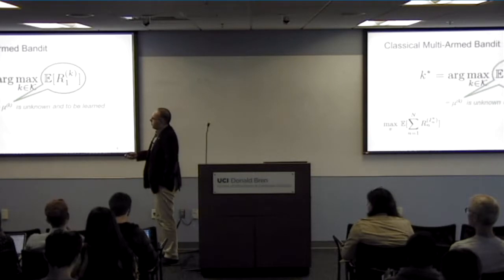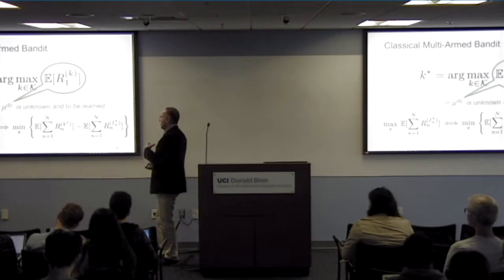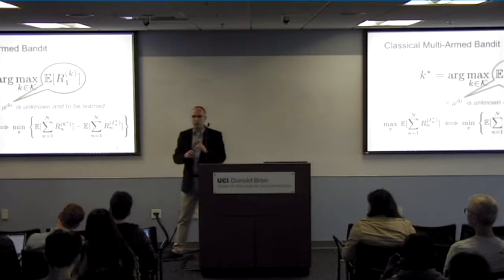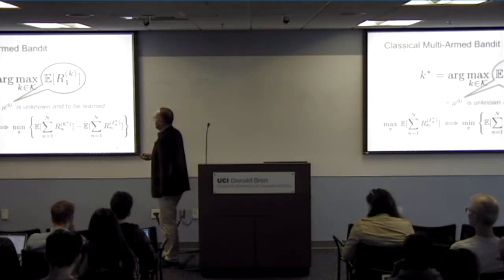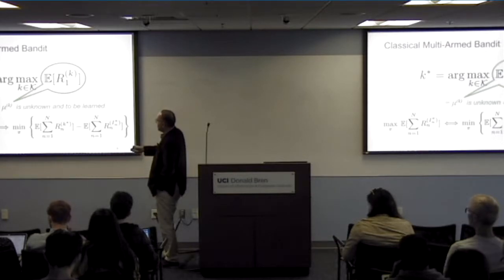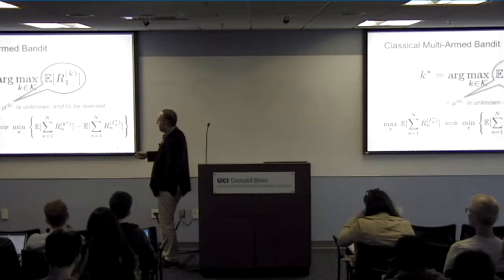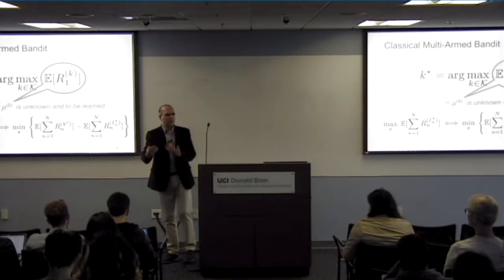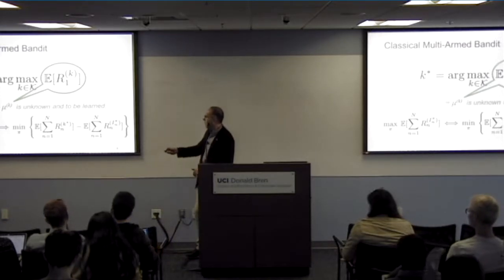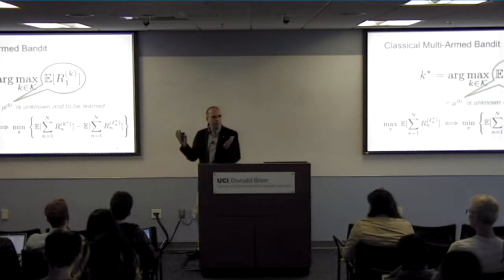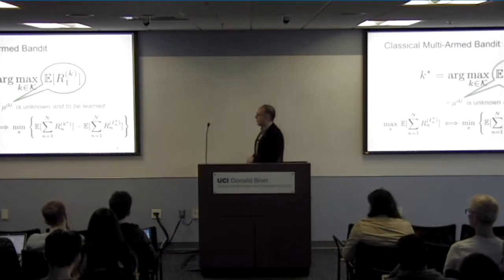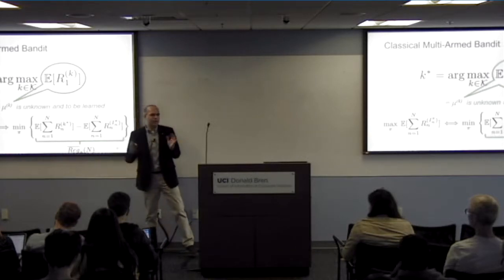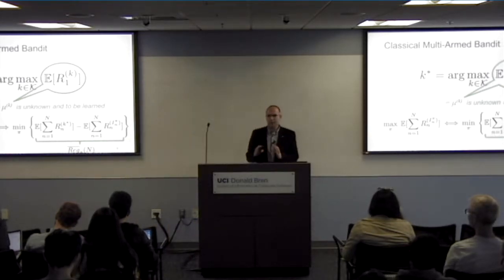Our optimization can be posed in terms of what we lose with respect to this best choice. This is the more natural way of writing this when you think of it as the regret you're going to pay. Instead of maximizing the reward we'll get, we minimize what we would have gotten with the optimal choice minus what we are actually getting. Because of the minus, the max becomes a min, and this part is essentially a constant — if we knew everything, that's fixed to the rate of the best arm. This is the so-called regret of a policy over a horizon of N steps, and this is what we want to minimize in the classical multi-armed bandit.